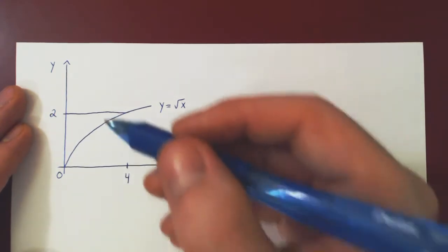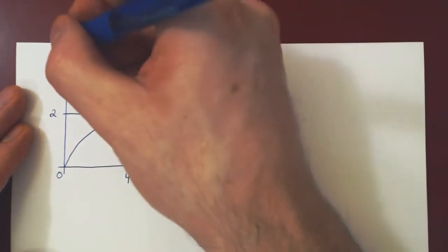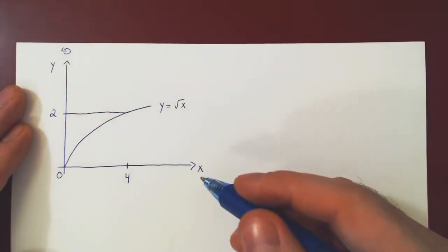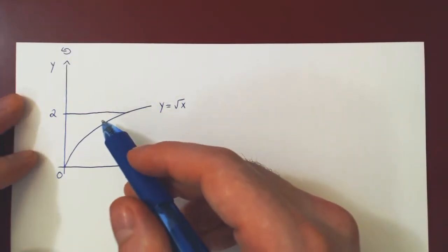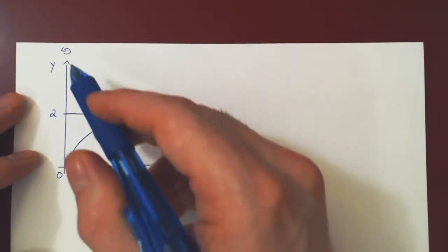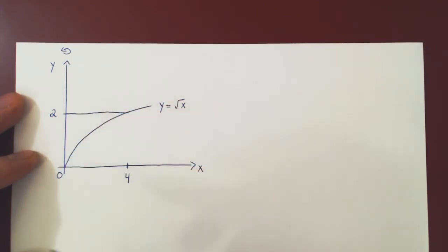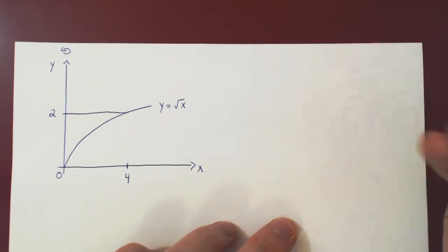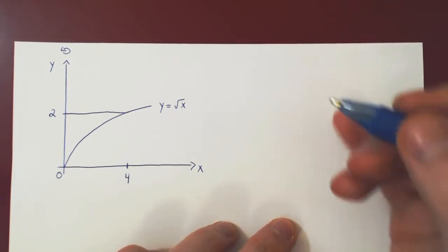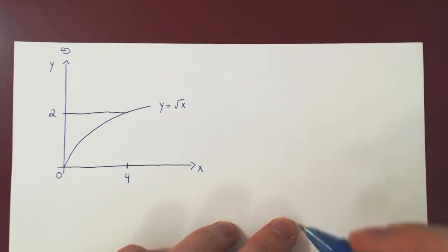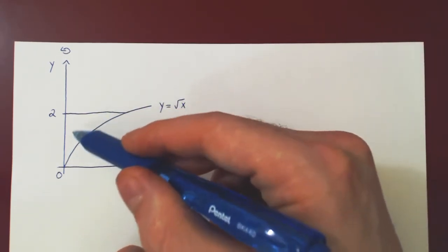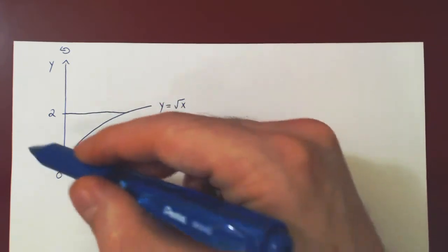We will take the y-axis as our axis of revolution. You can imagine revolving this region about the y-axis — it will generate a very interesting solid that you can visualize. Let's try and reproduce here a three-dimensional picture of this solid, obtained by revolving the region about the y-axis.